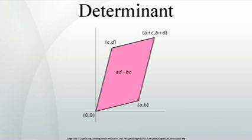Assume A is a square matrix with n rows and n columns. The entries can be numbers or expressions, as happens when the determinant is used to define a characteristic polynomial. The definition of the determinant depends only on the fact that they can be added and multiplied together in a commutative manner. The determinant of A is denoted as det(A), or it can be denoted directly in terms of the matrix entries by writing enclosing bars instead of brackets.